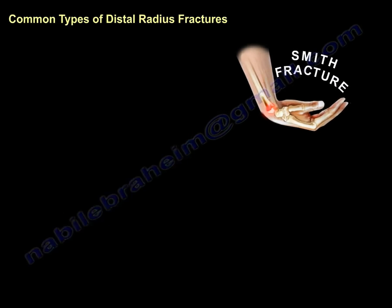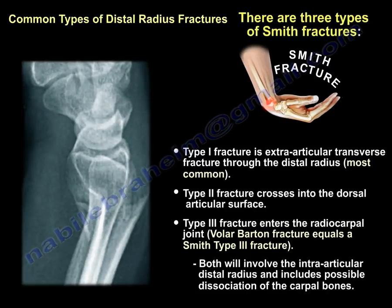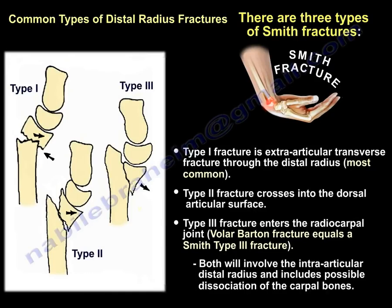Smith fracture has multiple types. Type 1 is an extra-articular transverse fracture through the distal radius and is the most common type. Type 2 crosses into the dorsal articular surface. Type 3 enters the radiocarpal joint, similar to volar Barton fracture. Therefore, volar Barton fracture equals a Smith type 3 fracture, and both involve the intra-articular distal radius with possible dissociation of the carpal bones.